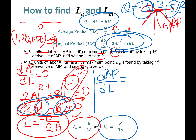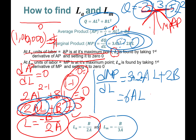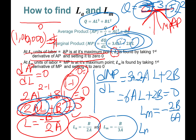Taking the derivative of 3aL² with respect to L: 3 times 2 comes up front, giving 6a, times L raised to the power 2 minus 1, plus 2b. So the first derivative of marginal product is 6aL + 2b. Setting this equal to 0 — again we're finding the maximum point.